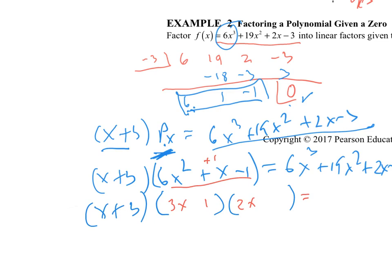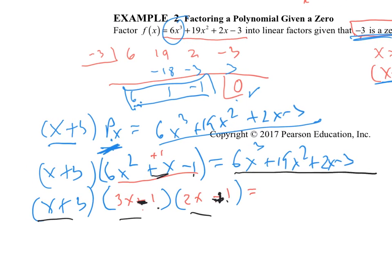The first number has to be 6 or 1, or maybe 3 and 2. You want them to add to positive 1 and multiply to negative 1. Let me try: 6x² − 3x + 2x − 1 doesn't work. Reversing signs: 6x² + 3x − 2x − 1. That gives (3x − 1)(2x + 1). So there are all three factors, and when multiplied together they give the original cubic.